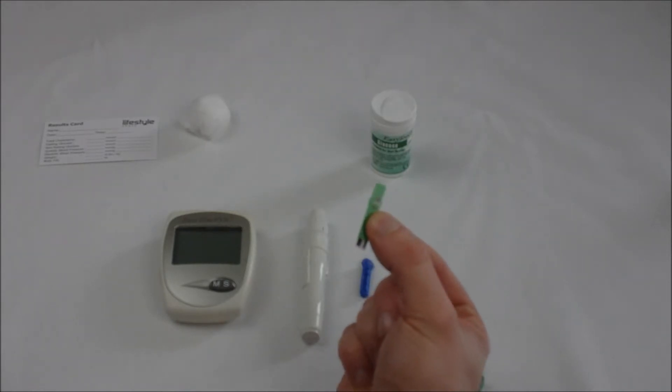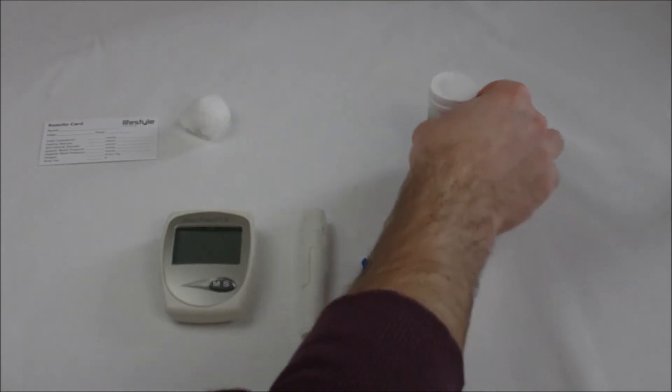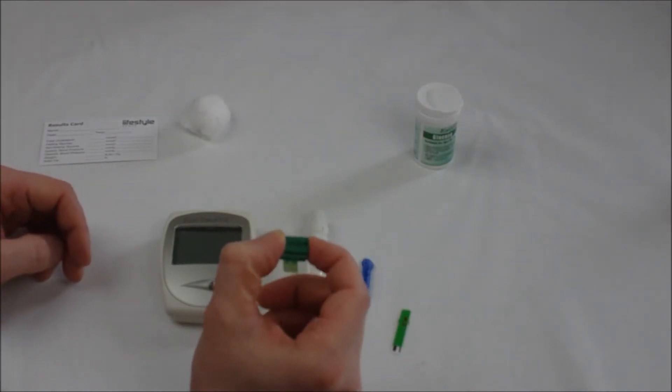You'll also need your green glucose test strips and your green code key, both of which can be found in your vial of glucose test strips. The first thing you're going to need to do is insert your code key.